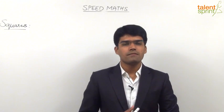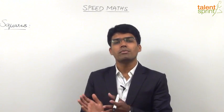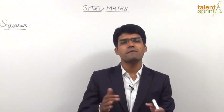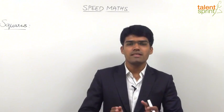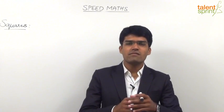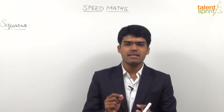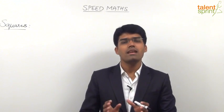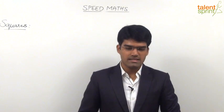We have no idea what 34 squared is, because we know squares only up to 30. Now if we try to take 34 as 50 minus 16, the procedure becomes really lengthy. So the point is, once we cross 80, the expansion will be 50 plus more than 30. And once a number is more than 30, the square is not known to us. So let us see how to find squares when the number crosses 80.